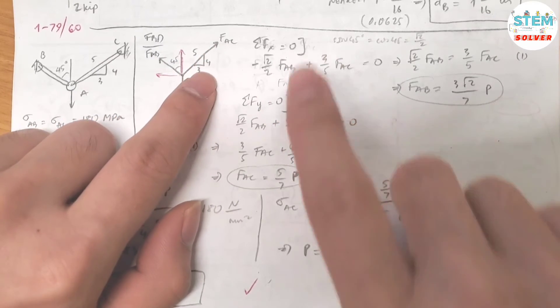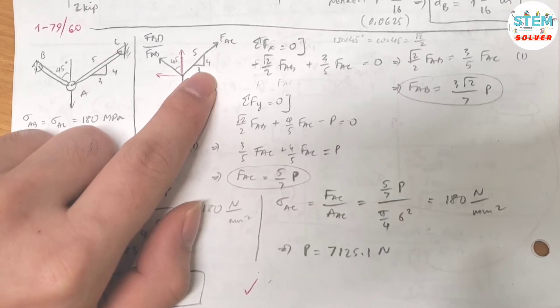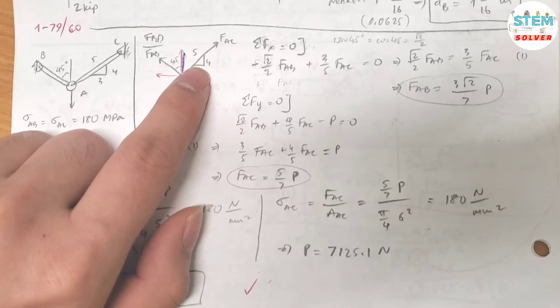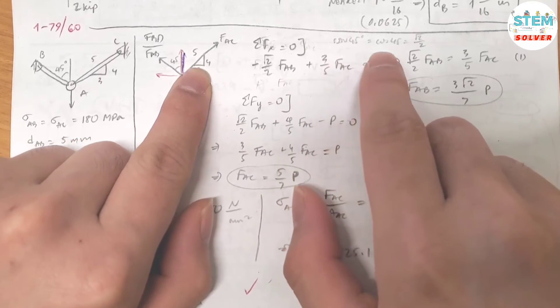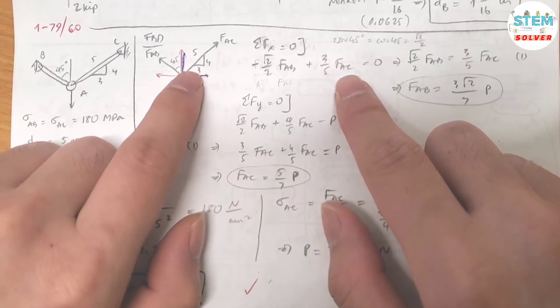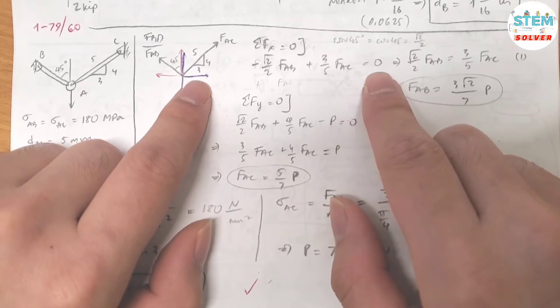For this one, you can also break it down into x and y components. Since we have the ratio over here, we cannot use sine or cosine of the angle. For the x-direction, you have FAB times 3 over 5, set that equal to 0.